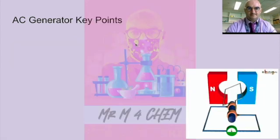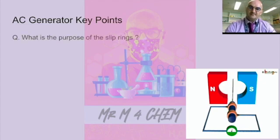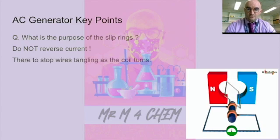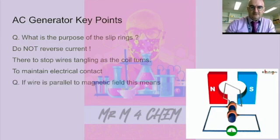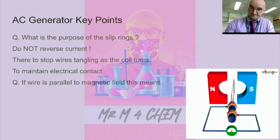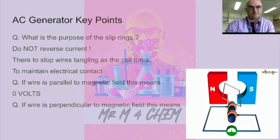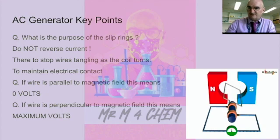The slip rings maintain electrical contact and stop this thing all tangling up. Let's have a look at some questions. Key points on the AC generator: What is the purpose of the slip rings? It is not to reverse the current. They do stop the wires tangling, but on the mark scheme it will say to maintain electrical contact. If the wire is parallel to the magnetic field, what does this mean? Zero volts. And if the wire is perpendicular to the magnetic field, this means maximum volts. You're often asked to label this thing. How do you learn it? Do it again and again. Watch a video, watch a GIF, read some texts. Use as many different methods as you can to get it into your beautiful brain.